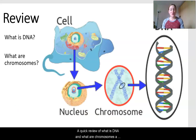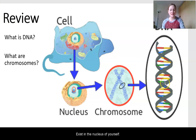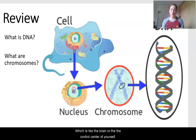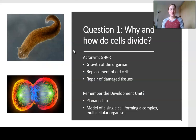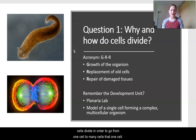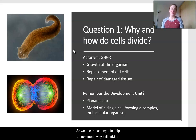A quick review of what is DNA and what are chromosomes. Your DNA exists in the nucleus of your cell, which is kind of like the brain or the control center of your cell. The first thing we want to talk about is why our cells divide. In order to go from one cell to many cells, that one cell has to divide to make more cells. We use the acronym GRRR to help us remember why cells divide.